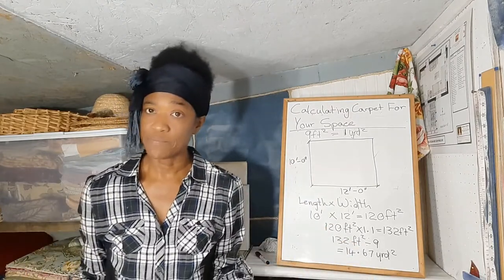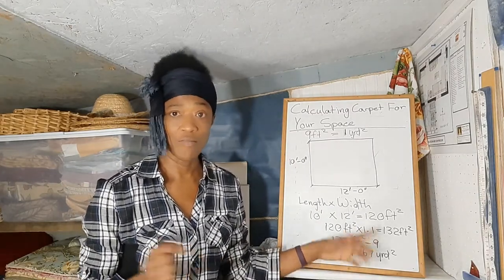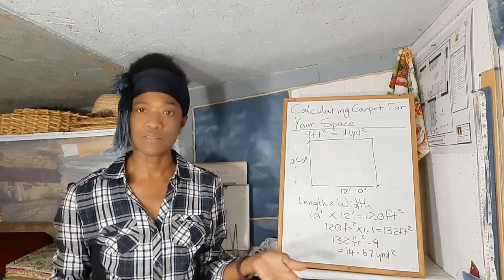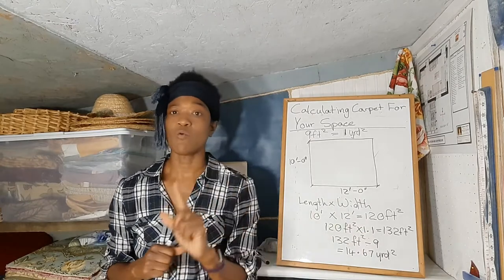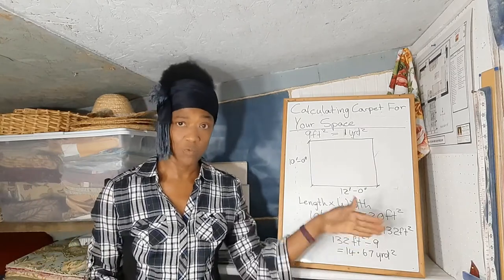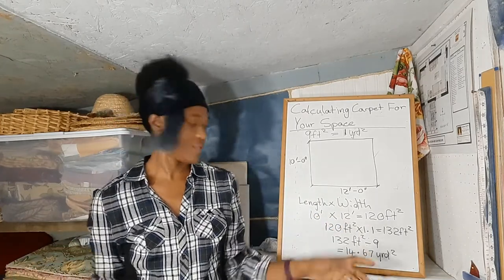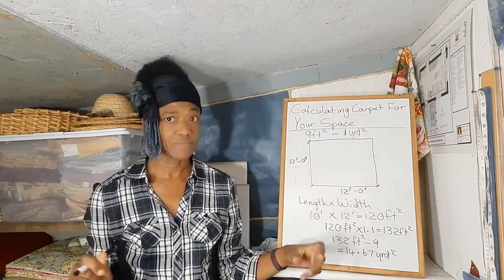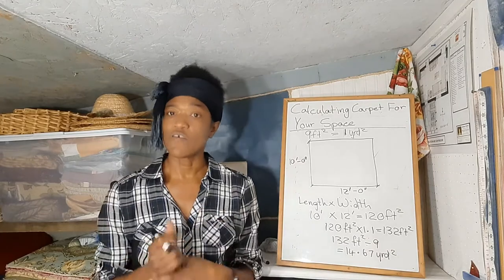You don't need to round up 14.67 — all you have to do is ask your supplier for 14.67 square yards of carpet, because we've already accounted for wastage when we multiplied by 1.1. However, in the interest of budget, if you want, you can round it up to 15 square yards, but you can go ahead and buy 14.67 square yards.